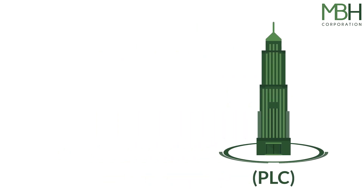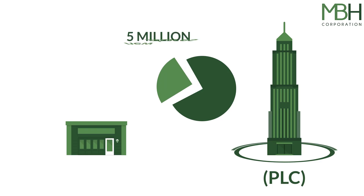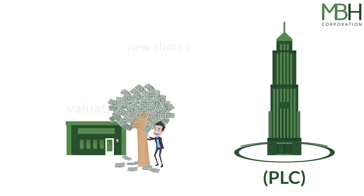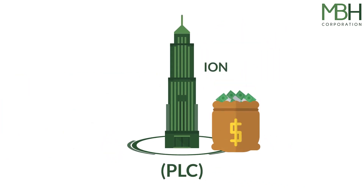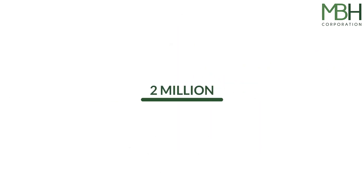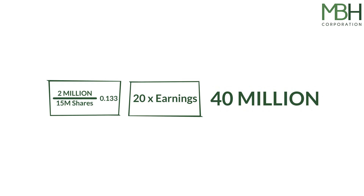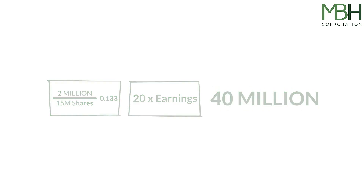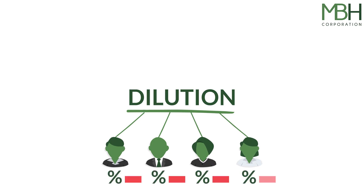Now imagine our PLC decides to acquire the small business using its own shares. It creates 5 million new shares to pay the founder, and now owns 100% of the business. The PLC now has 2 million in profit — its original 1 million plus the additional 1 million from the small business. That 2 million divided by the 15 million shares shows a higher earnings per share of 0.133. With the valuation still at 20 times earnings, the total value of the PLC is now 40 million.